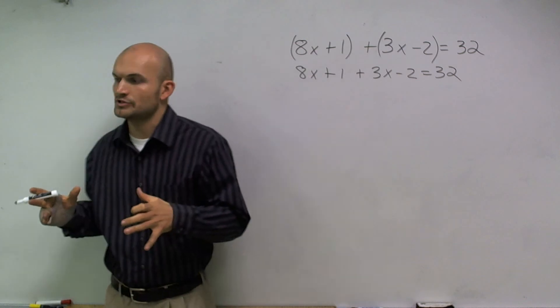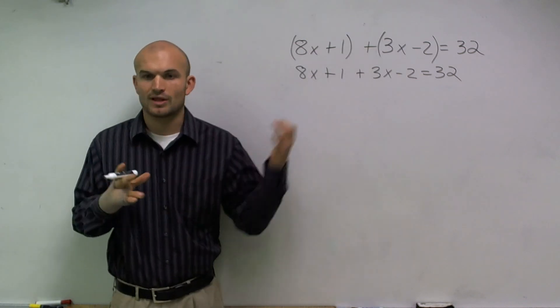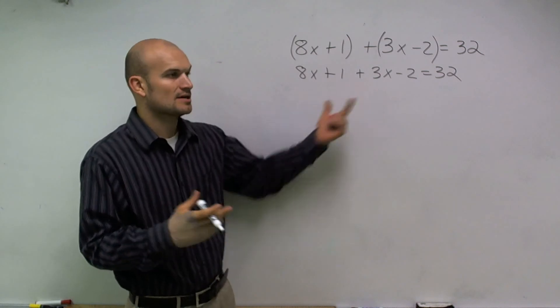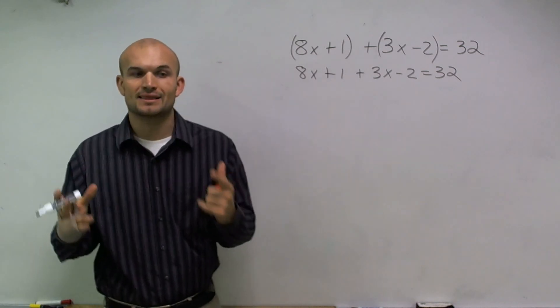Now remember, whenever you're solving an equation, you need to make sure when you're solving for a variable x, we can only solve for one variable. We can't solve for two of the x's. So the next thing I'm going to do is combine like terms.